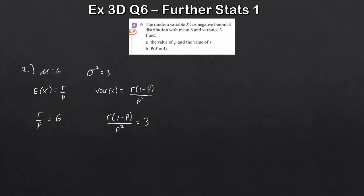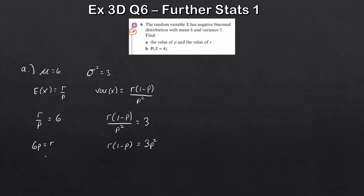To solve, multiply the first equation through by p to get r equals 6p, and multiply the second through by p squared to get r(1−p) equals 3p². Substituting r = 6p into the second equation gives 6p(1−p) = 3p². Expanding: 6p minus 6p² equals 3p².